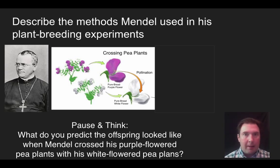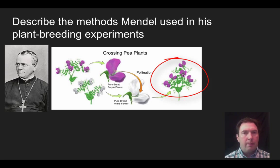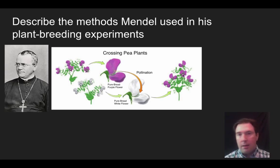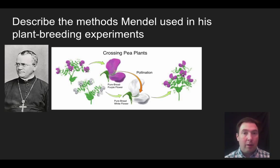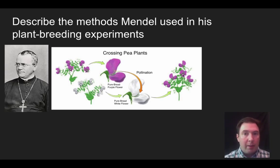So what happened when Mendel crossed the purple flowers with white flowers? He got nothing but purple flowers. Maybe you thought they'd be purple, or white, or maybe a light purple because you thought there'd be some sort of blending. It's not 100% clear what Mendel thought at the time, but blending as a form of genetics was thought to have existed before Mendel's time. Charles Darwin was a big supporter of the blending hypothesis and would have proposed a light purple flower as a blend between the two — but that's not what Mendel got. He got a deep purple flower.